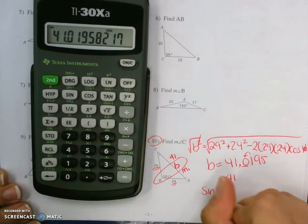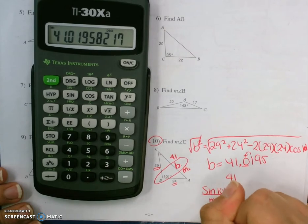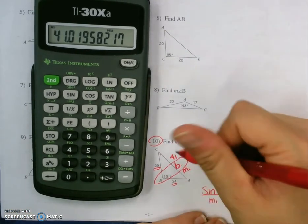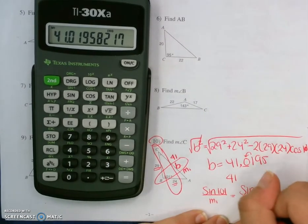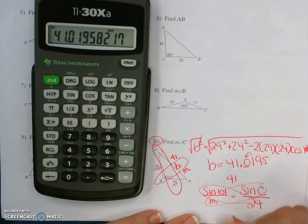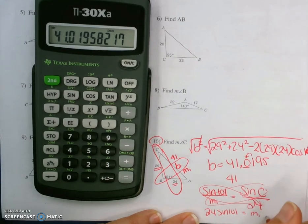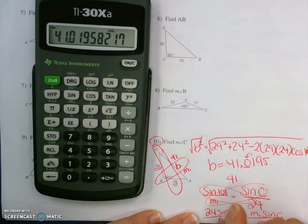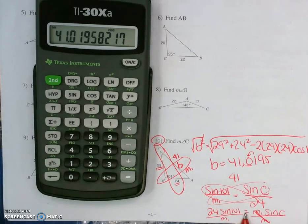Now that I have B, I can use the law of sines, because the sine of 101 is to my B, or my memory one, as sine of C is to 24. Cross products and solve.